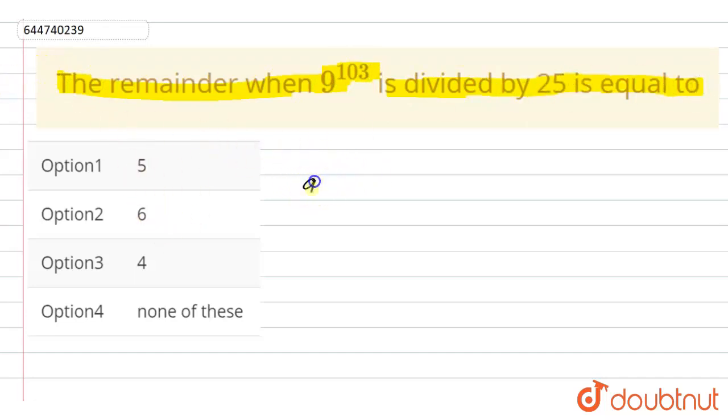We have 9 to the power 103. This can be written as 9 into 9 to the power 102.